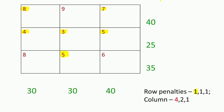For the second row, the minimum cost is 3, the next minimum is 4, so the penalty is 4 minus 3 which is 1. For the third row, the minimum cost is 5, the next minimum is 6, so the penalty is 6 minus 5 which is 1. Now we compute the column penalties. For the first column, the minimum cost is 4 and the next minimum is 6, giving a penalty of 4. For the second column, the minimum is 3 and the next minimum is 5, so the penalty is 5 minus 3 which is 2. For the third column, it is 6 minus 5 which is 1.